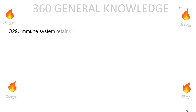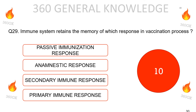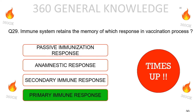The immune system retains the memory of which response in the vaccination process: passive immunization response, anamnestic response, secondary immune response, or primary immune response? The correct answer is primary immune response.